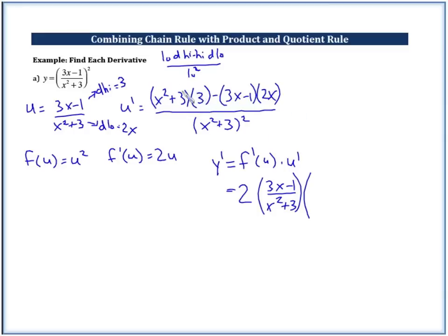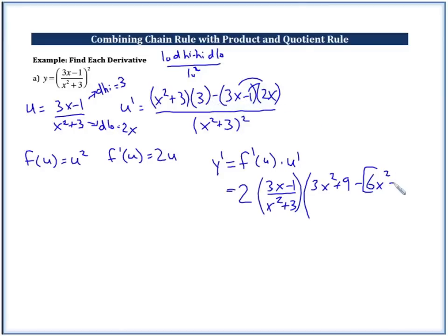We can go ahead and simplify just a little bit as we go. So this would be 3x squared plus 9 minus — let's go ahead and distribute here as well — so 6x squared, and then let's put our brackets here so we don't get messed up with that minus. So we have 6x squared and then minus 2x, all over x squared plus 3 squared.